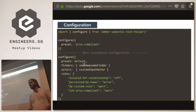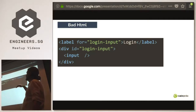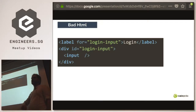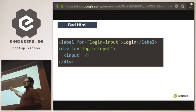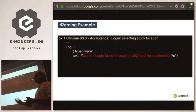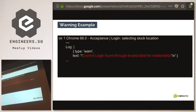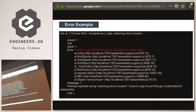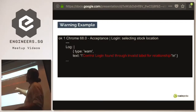Here's an example of a semantically incorrect label. We have a label targeting a div, but labels are only allowed to target form controls — the correct way is that this label should target the input. When you run your tests with the configuration set to throw an error, it will tell you that 'control login was found through the invalid label-for relationship' so you can fix it. If you want to keep your velocity high, you can set it to warning mode — your test will pass, but allows you to find your mistakes.